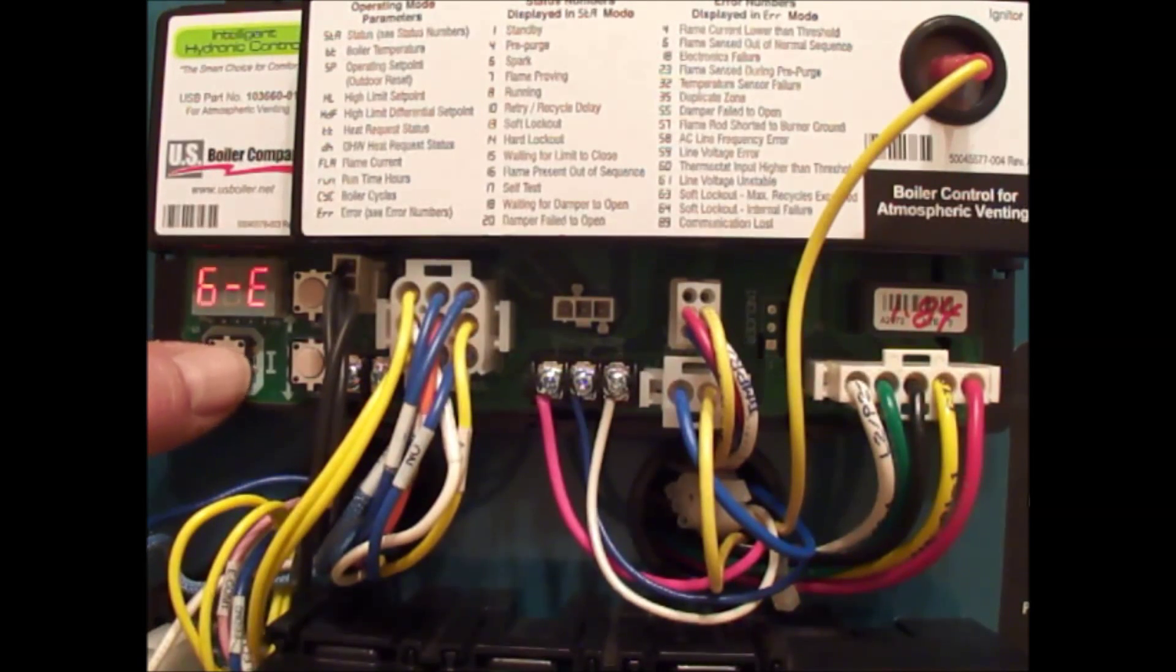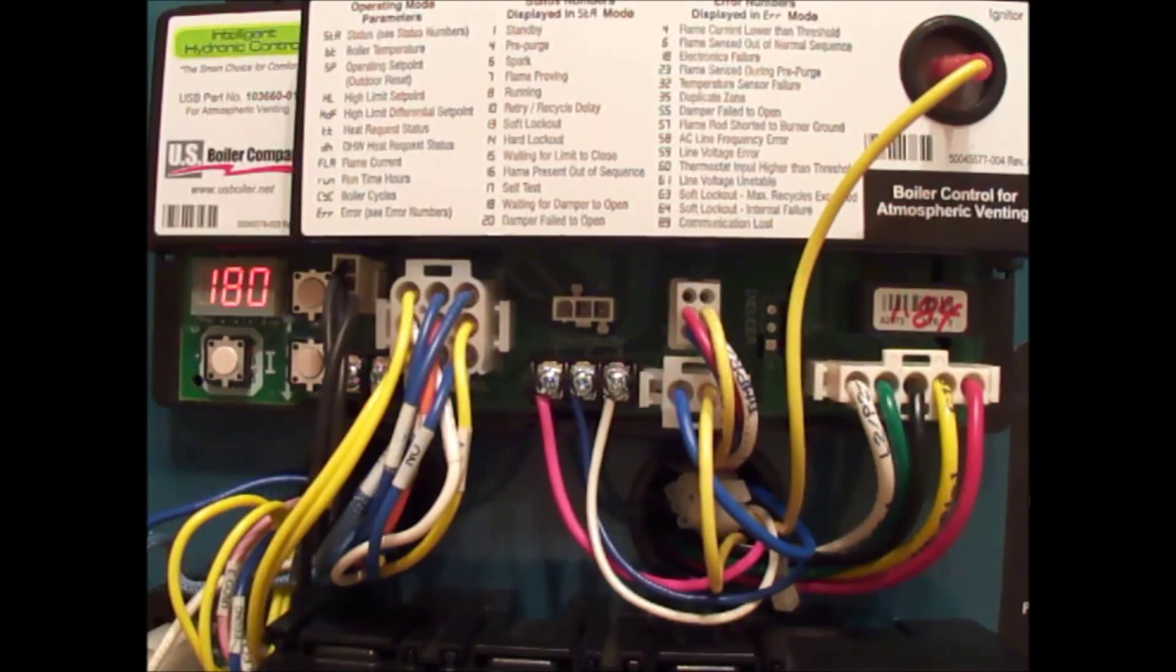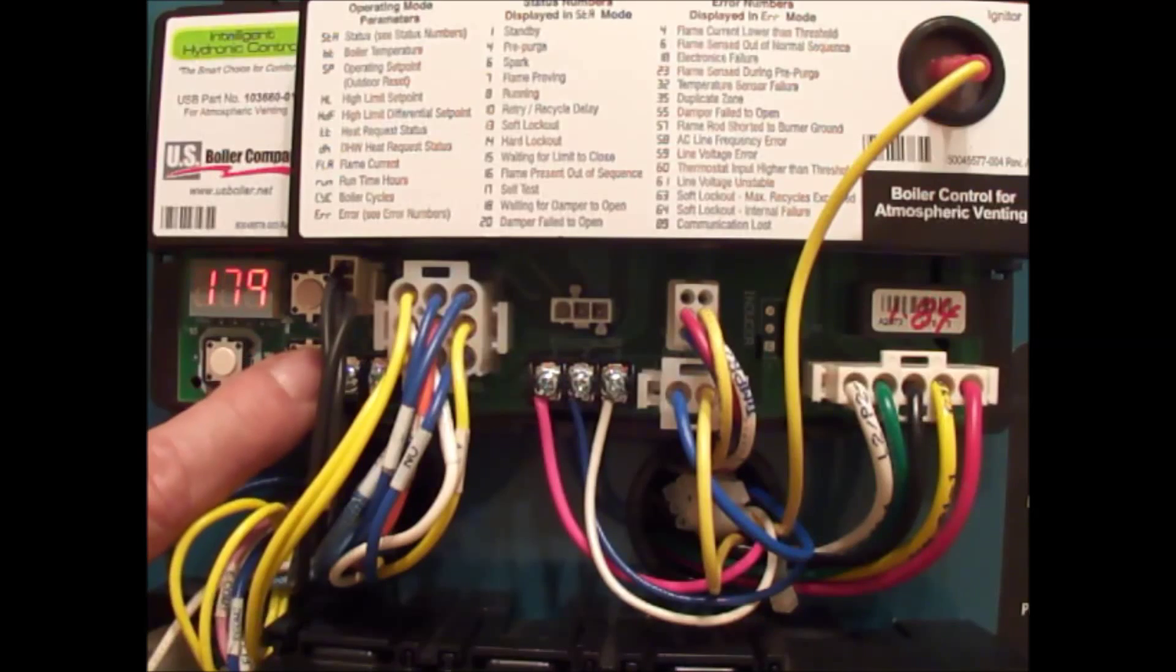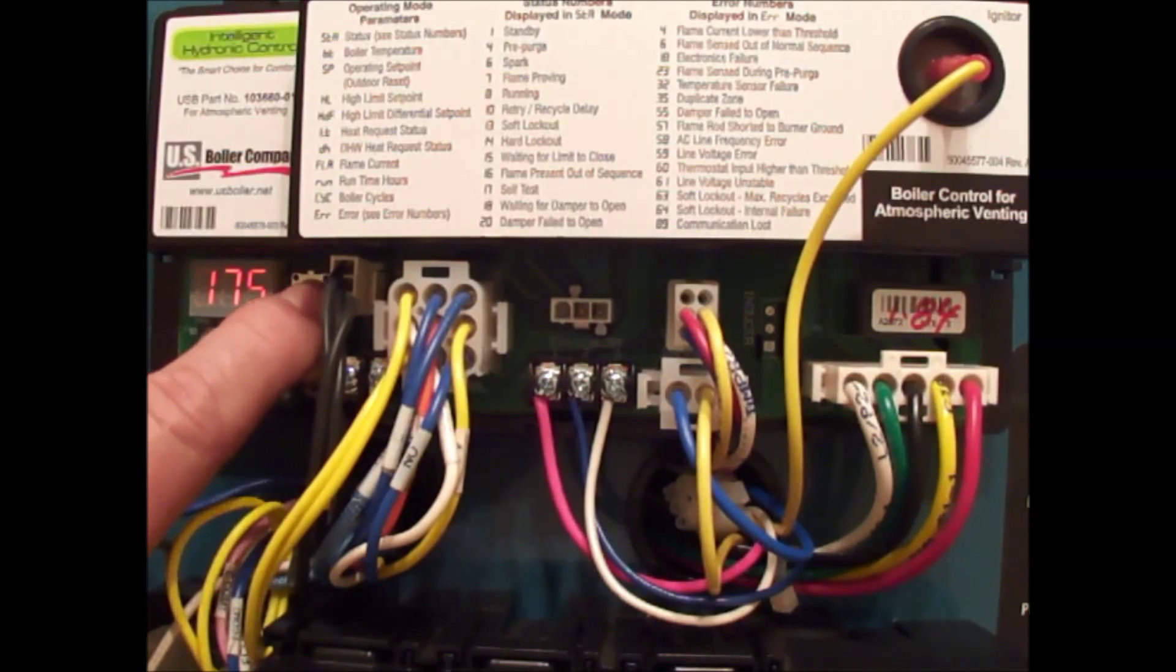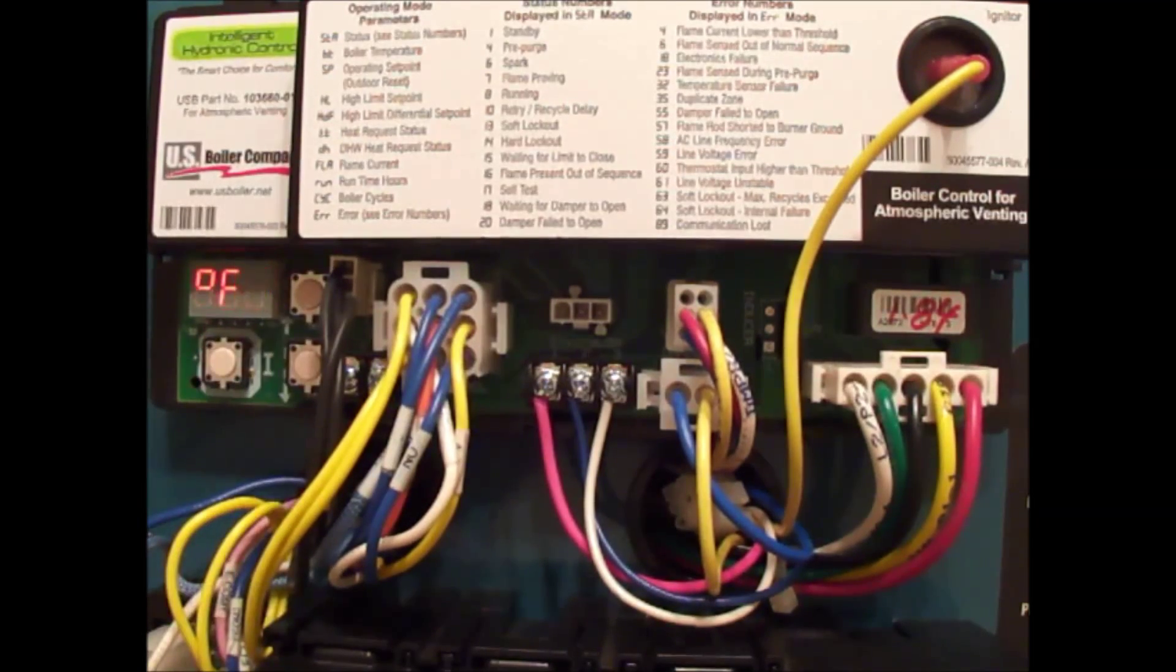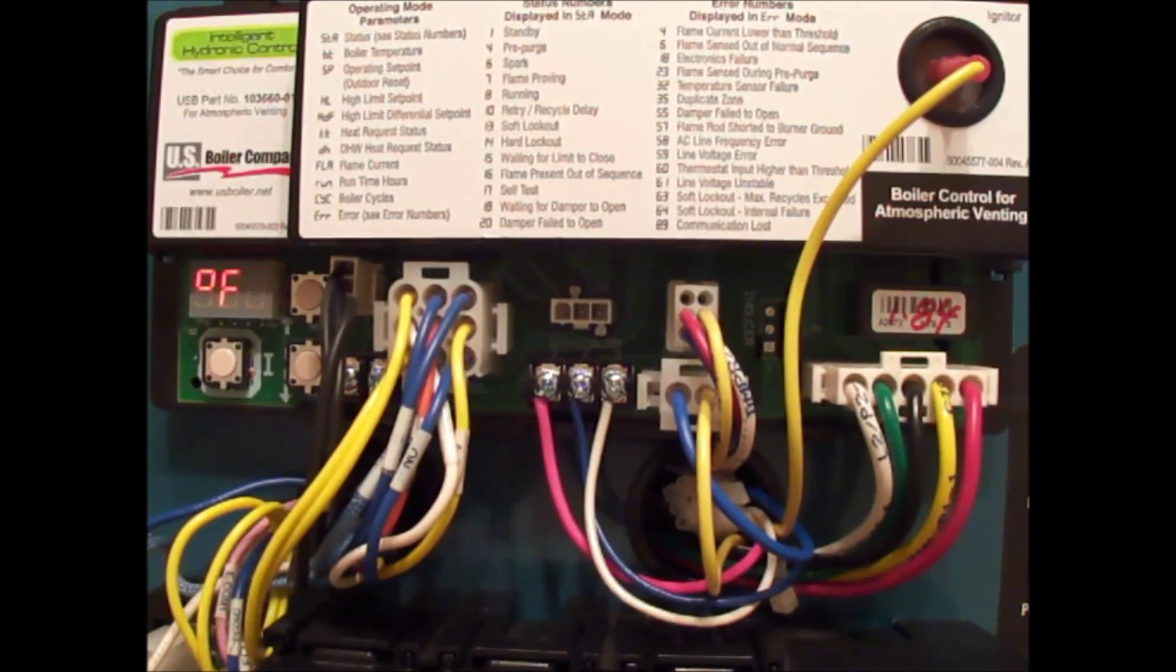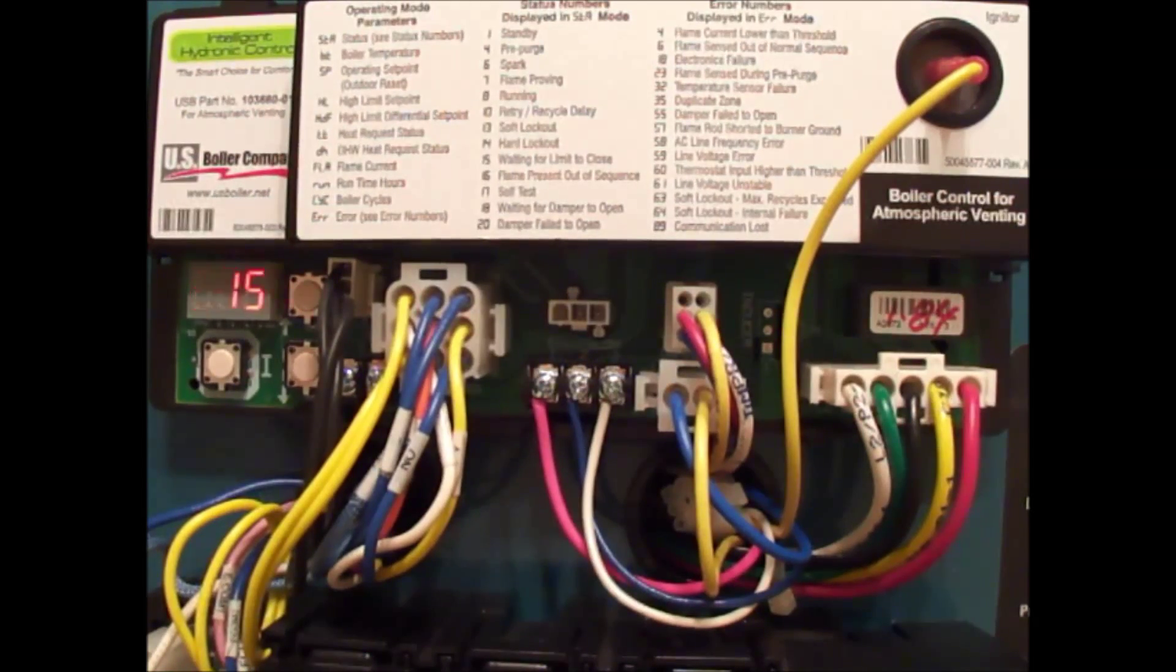Let me go around to the beginning. The first one we look at is high limit. We can change the high limit up or down; it is defaulted to 180. If we make a change, as soon as we hit the i button it saves automatically. Next one's differential—we have a 15 degree differential on this control.